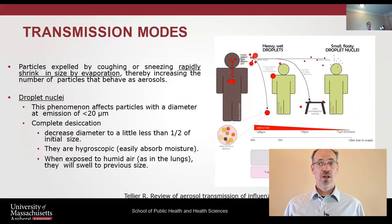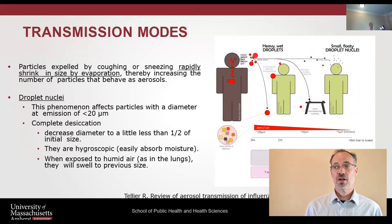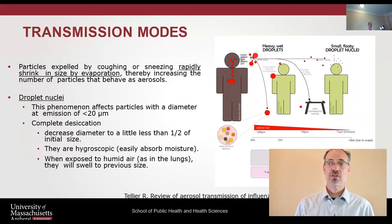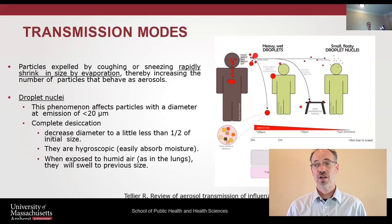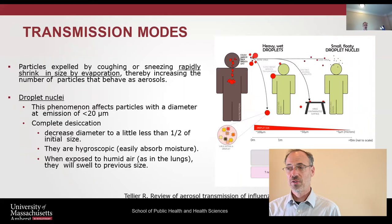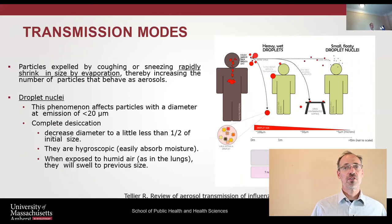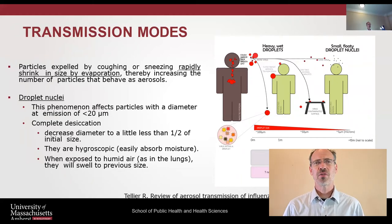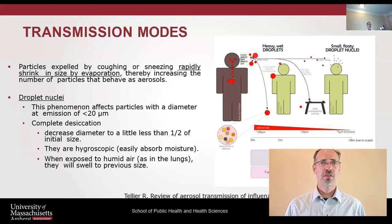Droplet nuclei: this phenomenon affects particles with a diameter at emission of less than 20 micrometers. Complete desiccation decreases the diameter to a little less than half of the initial size. They're hygroscopic — they easily absorb moisture. It varies by pathogen. One paper on COVID-19 noted particles can remain in the air up to 20 feet for a very long time, though there's still a lot that's not known about aerosol transmission.